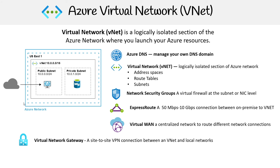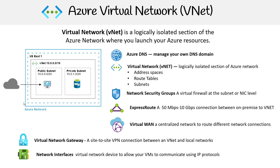Then you have the Virtual Network Gateway, which is a site-to-site VPN connection between VNets and local networks. Then you have your NICs — your network interfaces — which are virtual network devices that allow VMs to communicate using IP protocols. And then you have all your load balancers and other things like that.